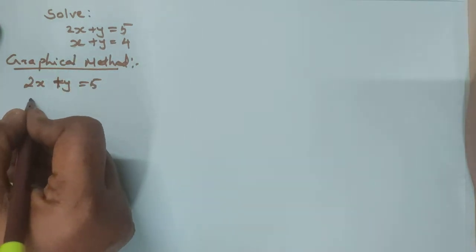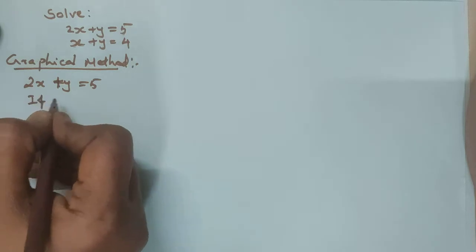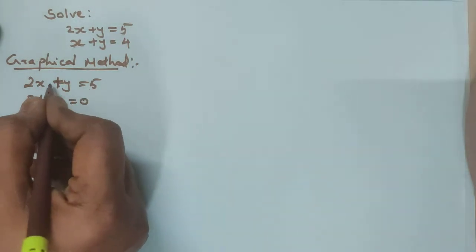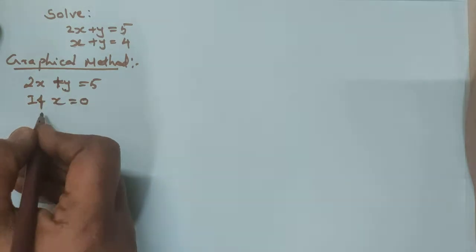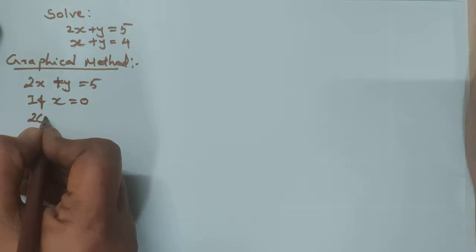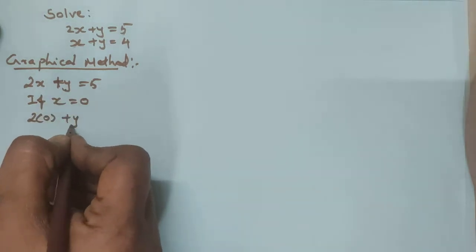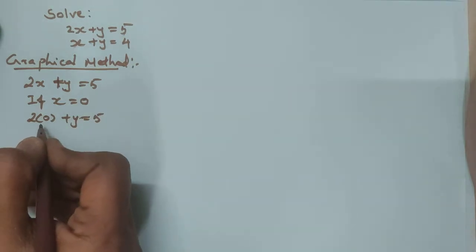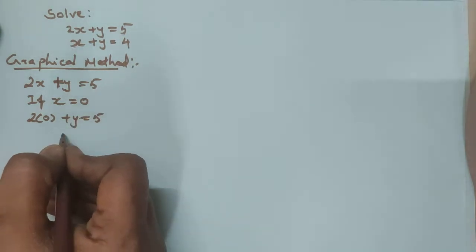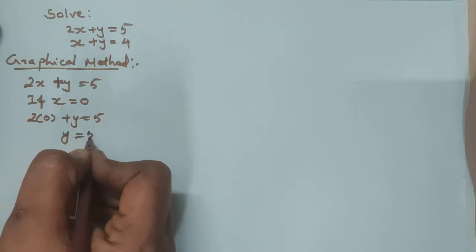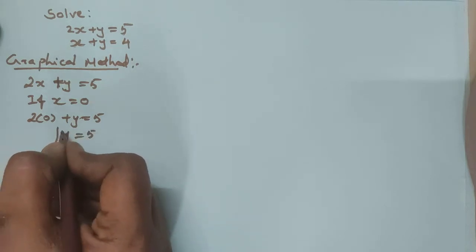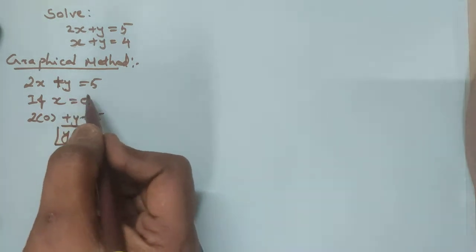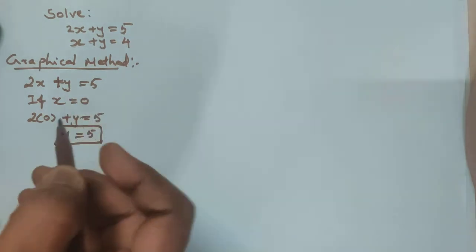Now I will explain an easy method. For all graphical questions, first you should assume x is equal to 0. So if x is equal to 0 for this equation, you will get 2 into 0 plus y is equal to 5. So 2 into 0 is 0, so only y will be there. So y is equal to 5. If x is equal to 0, you will get y as 5.